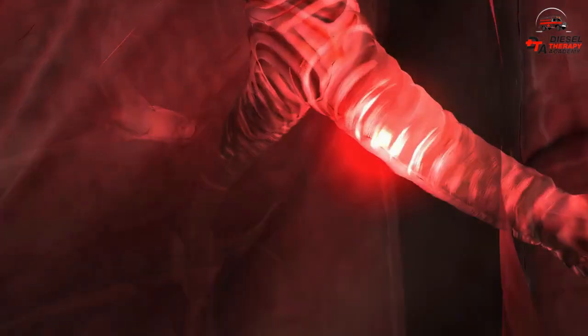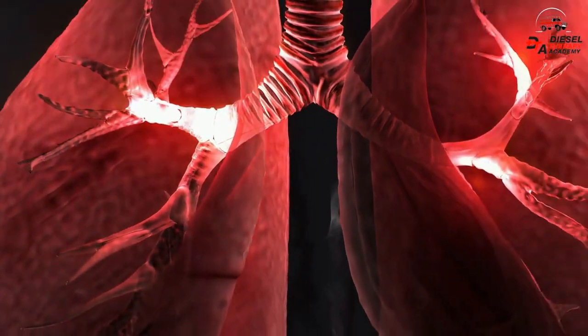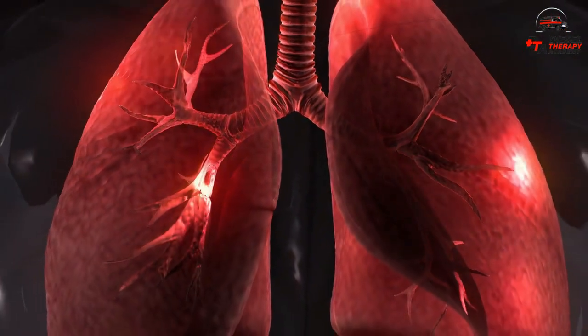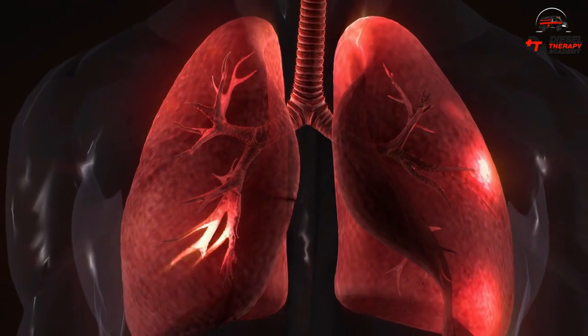At the same time, the muscles between your ribs pull your ribcage up and out. This expands the chest and draws air into the lungs.